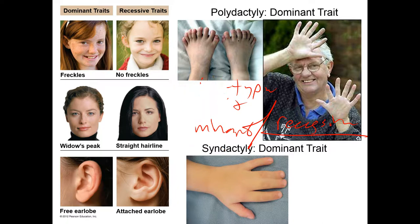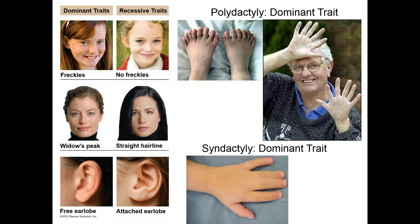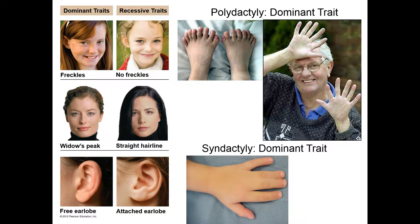Some examples: having freckles is a dominant phenotype; not having freckles is recessive. Having a widow's peak is dominant over a straight hairline. Having a free earlobe is dominant over an attached earlobe. For recessive wild type examples: we all have five fingers and toes — that's a wild type trait. But that wild type trait is actually recessive; the dominant trait is polydactyly, having more than five digits. You don't see polydactyly predominantly in the population.